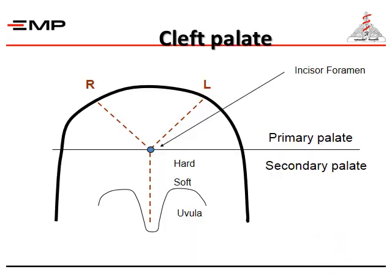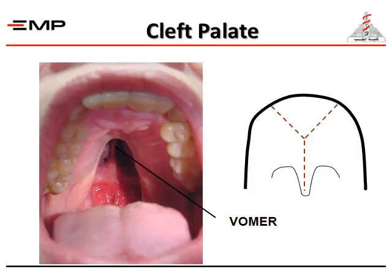Here's a diagram showing the cleft palate: the primary palate extends up to the incisive foramen, and the secondary palate extends further below up to the uvula. Here is also a diagram and photo showing the vomer bone.